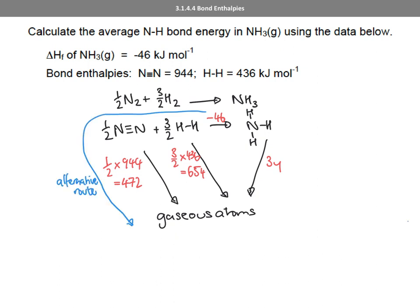So 3y = +46 + 472 + 654 = 1172 kJ/mol. Therefore y = 1172 ÷ 3 = 391 kJ/mol (to three significant figures). That concludes bond enthalpies. I've given three examples, and it builds on what you were doing with the application of Hess cycles and what you did at GCSE. If you have any questions about this topic, please let me know and I'll do my best to answer them.